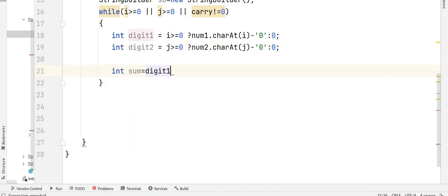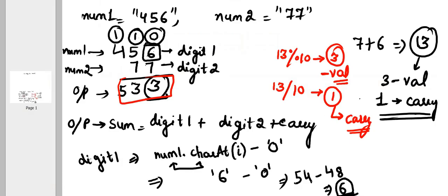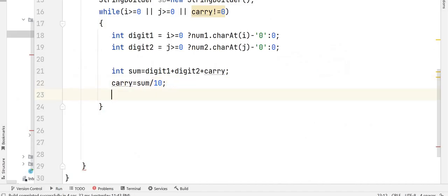And then what would be your sum? Sum would be your digit 1 plus digit 2 plus carry. This is how we are finding the sum and what would be your carry? Sum divided by 10. So here I have shown you how we are going to get the carry which is divided by 10 and how you are going to get the sum value? That would be sum mod 10.